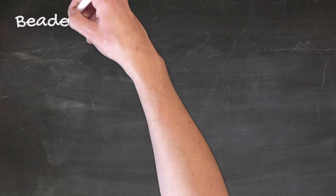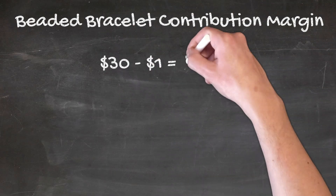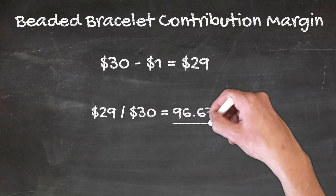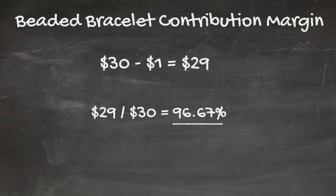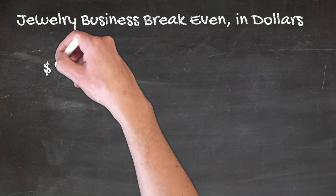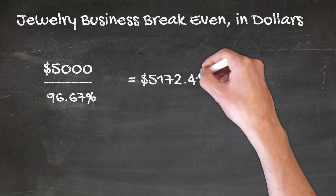Remember, beads are very inexpensive. Let's assume you sell a beaded bracelet for $30, and that beads, string, clips, etc. round up to $1 in input costs. So your contribution margin is $29 in profit divided by $30 in sales price, or 96.67%. Dividing $5,000 in fixed costs by 96.67%, you come up with a breakeven point of $5,172.41. Not bad.